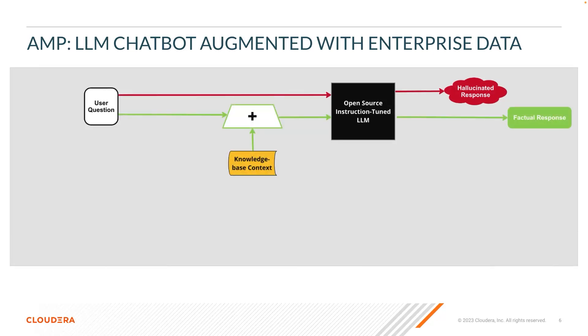So you just saw an open source instruction-tuned large language model hosted in CML, and you saw a web application where a user could ask an enterprise-specific question that would likely result in a hallucinated or incorrect response. One strategy to minimize hallucinated responses is to give it context from your enterprise data, effectively creating a subject matter expert chatbot.